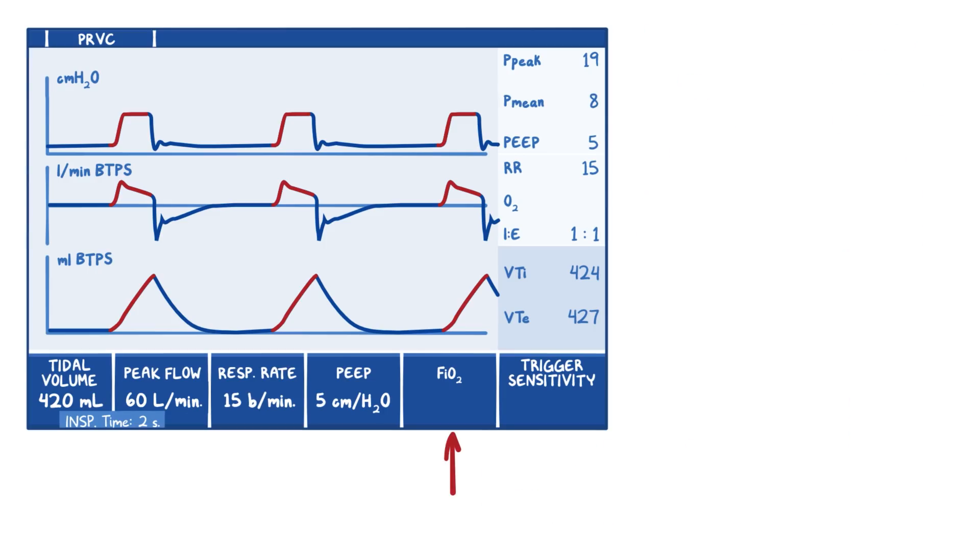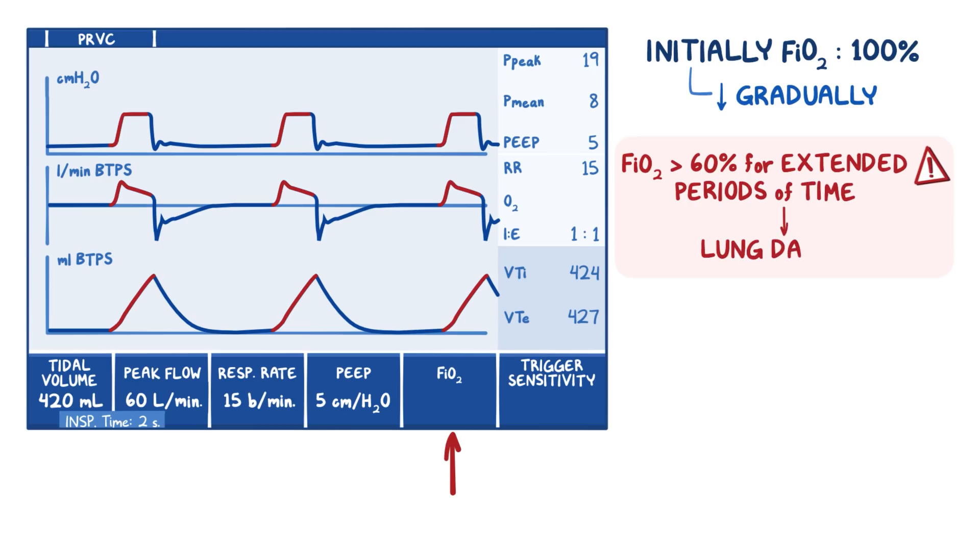Finally, we'll set our FiO2. When we initially intubate and ventilate a patient, we want to optimize their ventilation and oxygenation. So we set the FiO2 to 100% and then wean down gradually. Remember, FiO2 greater than 60% for extended periods of time can cause lung damage, especially in hypersensitive neonatal lungs. So we want to wean below that number as soon as we can. Our goal for oxygenation is a PaO2 of 60 to 80 millimeters of mercury and an SaO2 of 92% and higher. Let's say our patient has been ventilated for a little while, so we'll set our FiO2 at 60% to start.